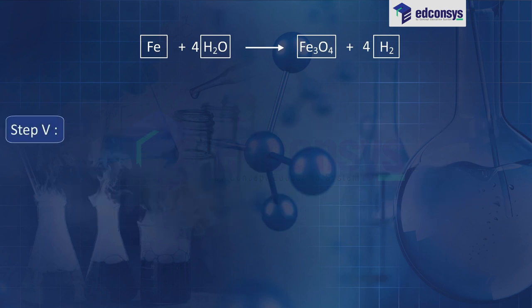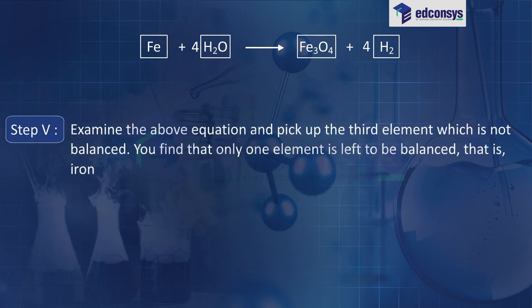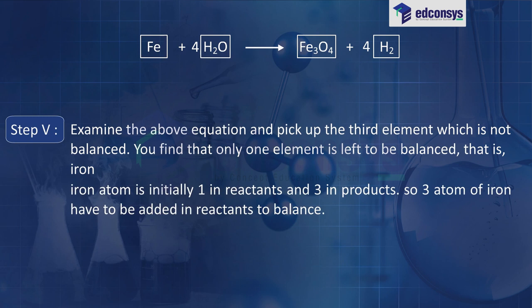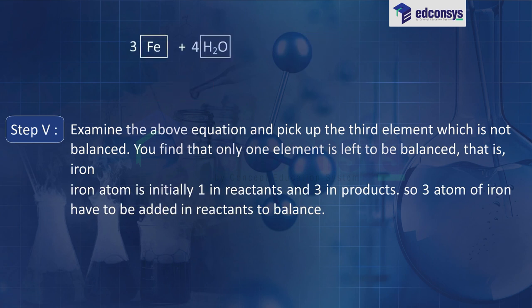Step 5: examine the equation and pick the third element which is not balanced — only iron remains. Iron is initially 1 in reactants and 3 in products, so 3 atoms of iron have to be added in reactants. The balanced equation becomes: 3Fe + 4H₂O → Fe₃O₄ + 4H₂.